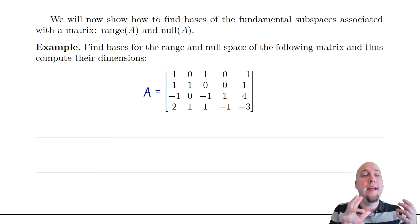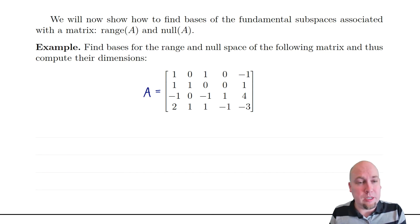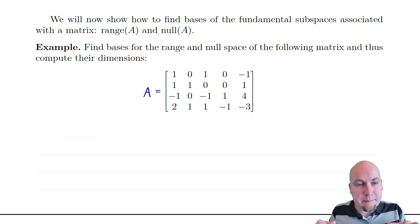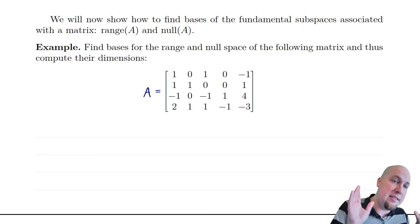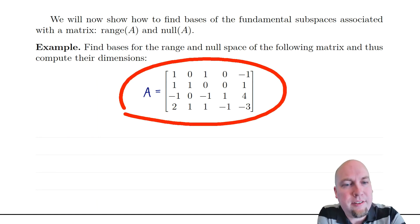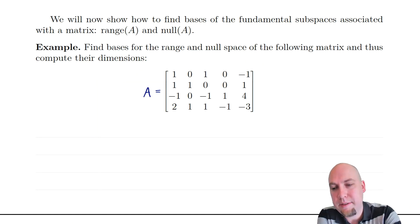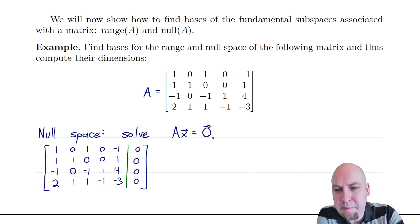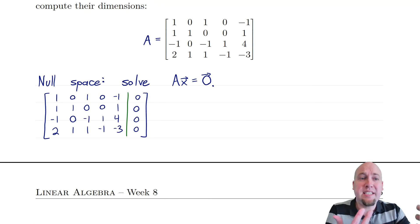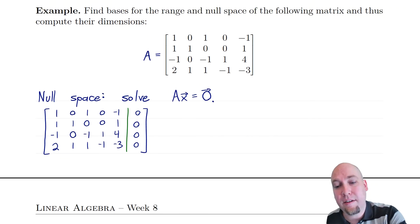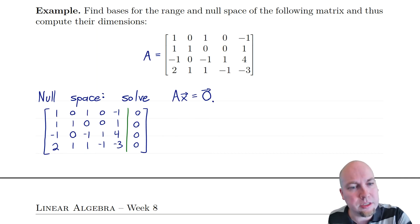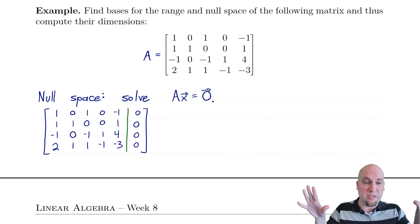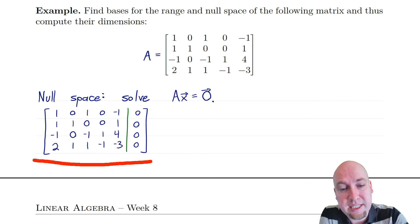Let's now look at the range and null space of a matrix. We've seen how to describe these in general; now let's see how to actually find bases of these two subspaces. It's maybe a little bit easier to do the null space first because we've basically seen the method before. The null space is the set of solutions to Ax = 0 — it's just a linear system. We take the matrix A, augment it with zeros on the right-hand side, and row reduce all the way to reduced row echelon form.